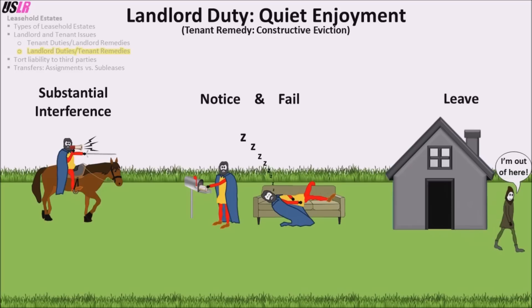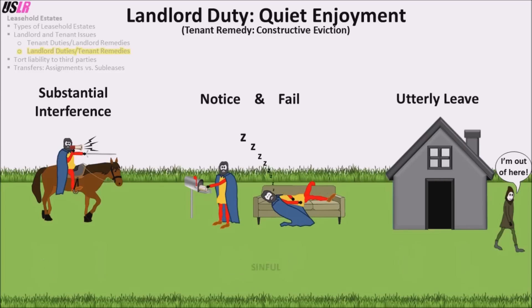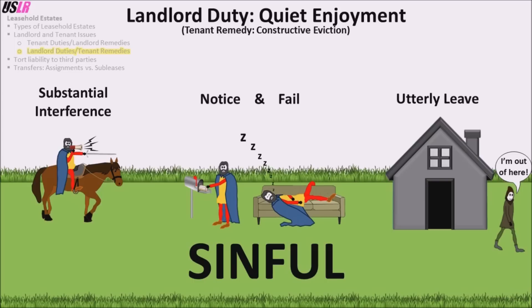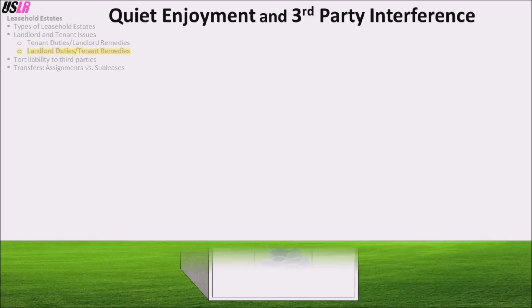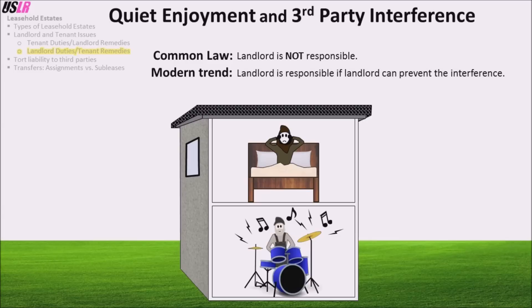The tenant must leave the property in a reasonable time after the landlord fails to correct the problem. One way to remember the elements of constructive eviction is the acronym SINFUL: Substantial interference, notice and fail, and utterly leave. Thus constructive eviction requires a sinful landlord who has substantially interfered, been given notice and failed to correct the problem, and caused the tenant to utterly leave in a reasonable time. Traditionally, the landlord was generally not responsible for interference caused by other tenants. However, the modern trend is that a landlord is responsible for an interference which he has the power to prevent.